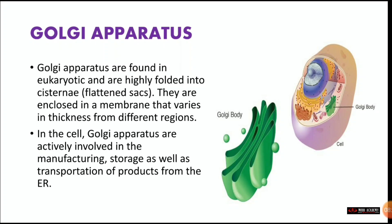Next is the Golgi apparatus. Golgi apparatus are found in eukaryotes and are enclosed in membranes that vary in thickness from different regions. It is a flat, sac-like structure. In the cell, Golgi apparatus are actively involved in manufacturing, storage, and transportation of products from the ER. It works similarly to the endoplasmic reticulum in helping with transportation. It is a flattened, sac-like structure you need to remember.